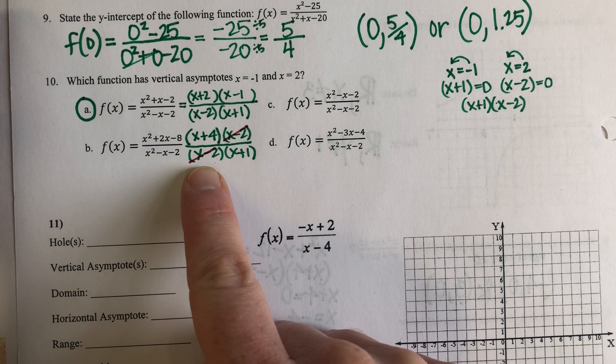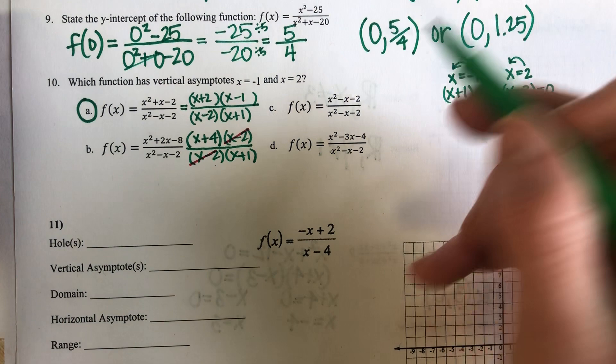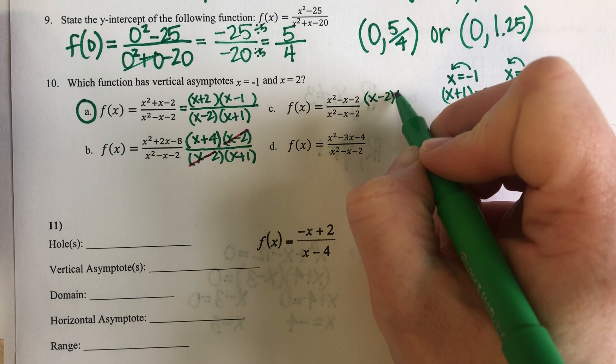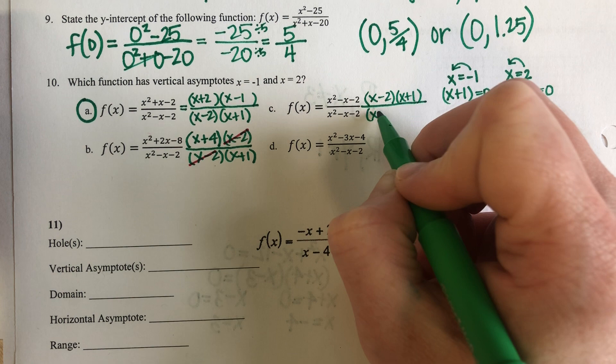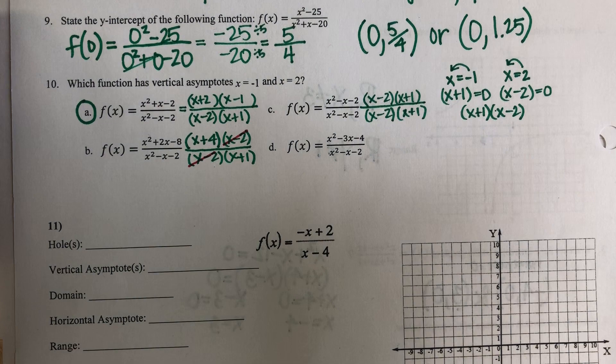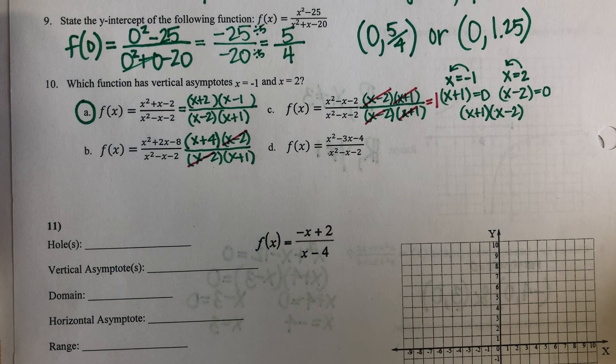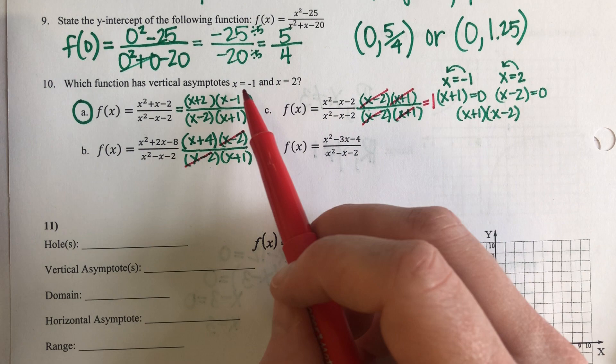Over here on answer choice C, the top factors into X minus two and X plus one over X minus two and X plus one — so everything cancels out, and that certainly does not give me vertical asymptotes at these two values.